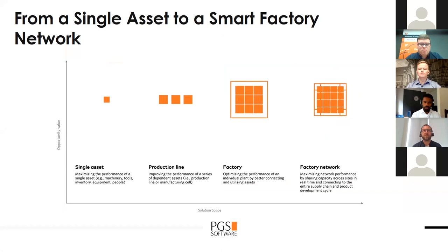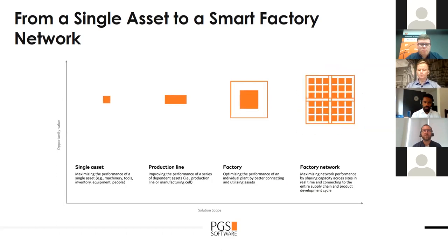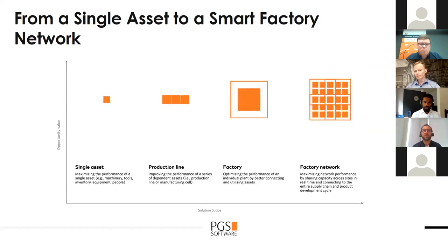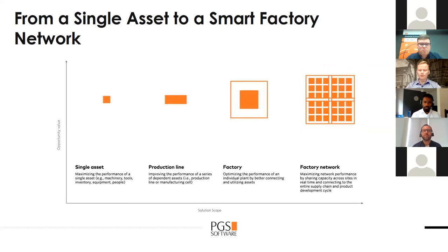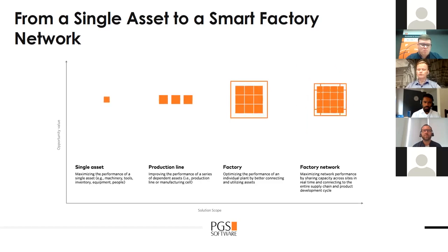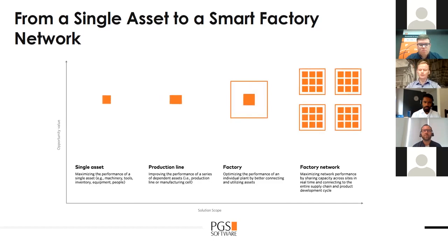We see four major steps in digitalization initiatives. Most initiatives start small with digitalization of single assets — we create a digital twin of a single machine like a press or furnace in a production line, and with that digital twin we can optimize its performance and implement machine learning to predict failures. Then when we have a few digital twins that are part of the same production line, we can create a digital twin of the whole production line and optimize its performance.